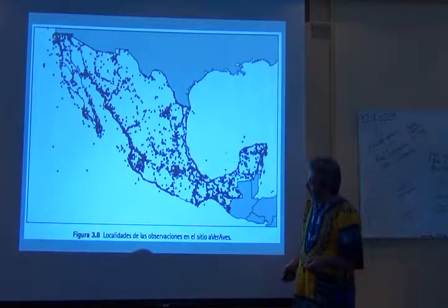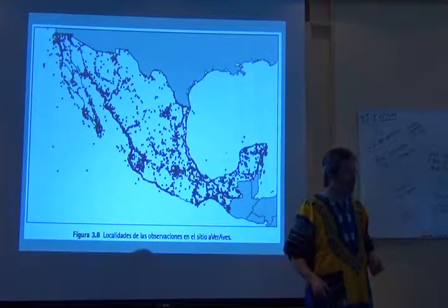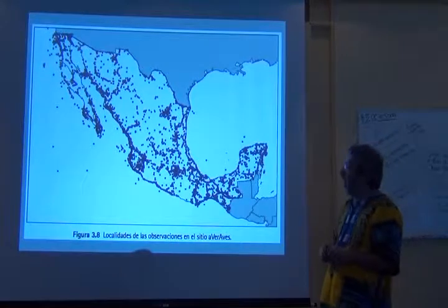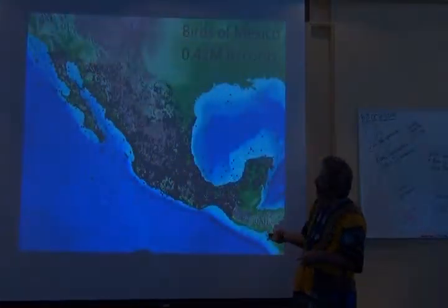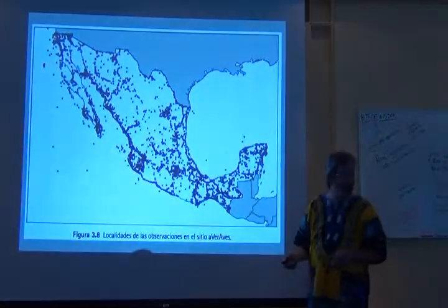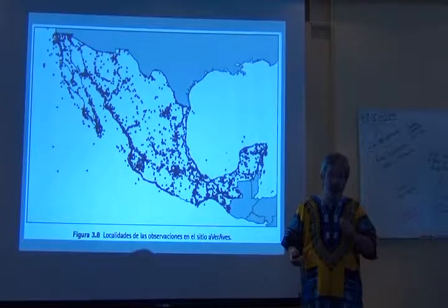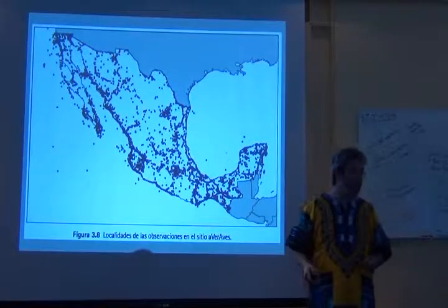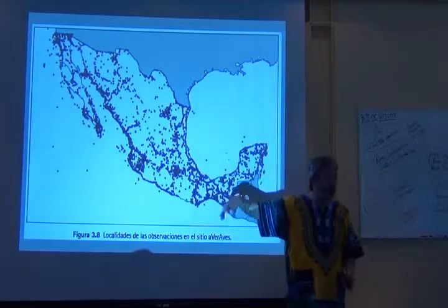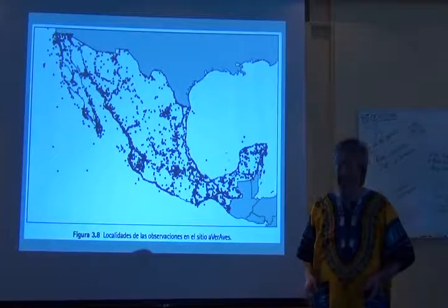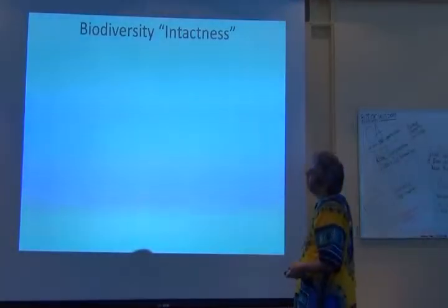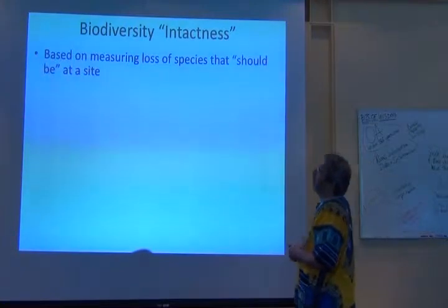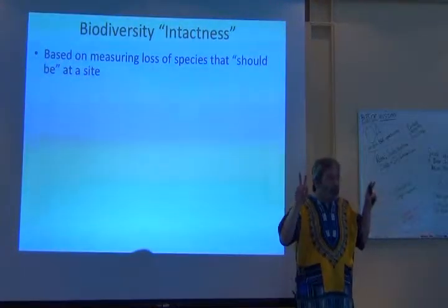Then we have a new data set called Averaves — which in Spanish cutely means 'let's watch birds.' You can see a lot of points on the map; there are a lot of birders out there reporting their sightings. You can also see that they report their sightings along roads, so we clearly have to interpolate and get into those gaps — but that's where we use niche modeling. What we did was try to calculate something we call biodiversity intactness: essentially detecting loss of species that should be at a site.